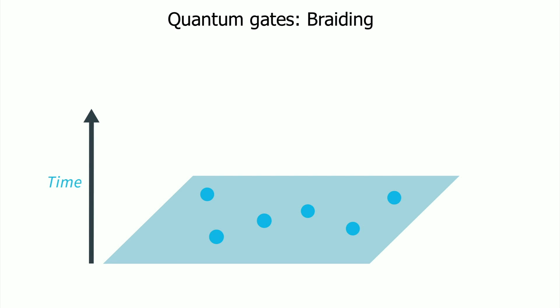Let's see how the exchange of two anyons happens as a function of time. If we follow the path of the particles, it now looks like a pair of braided looms. This is why the quantum operations on topological qubits are called braiding.